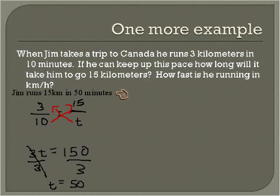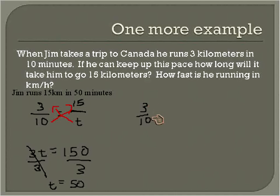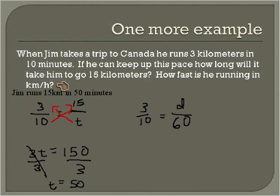That doesn't tell us much in everyday terms, so there's a follow-up question: how fast is he running in kilometers per hour? We need a second proportion. I start again with 3 over 10 — he runs 3 kilometers in 10 minutes. What I'm searching for is the distance d he'll run in 60 minutes. Since 60 minutes equals one hour, this tells us how fast he's running in one hour. That's the key — keeping everything in minutes so the fractions match.